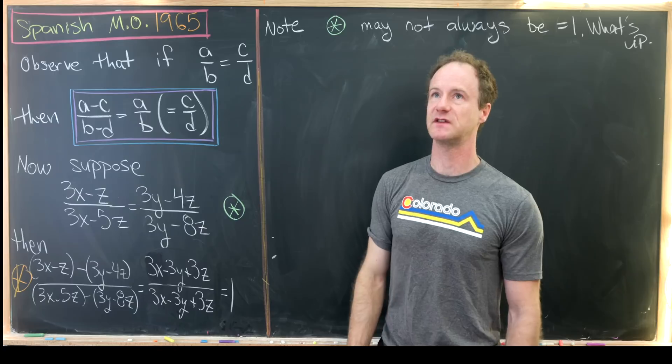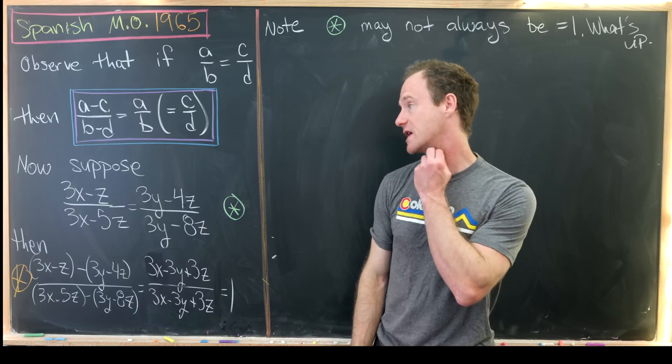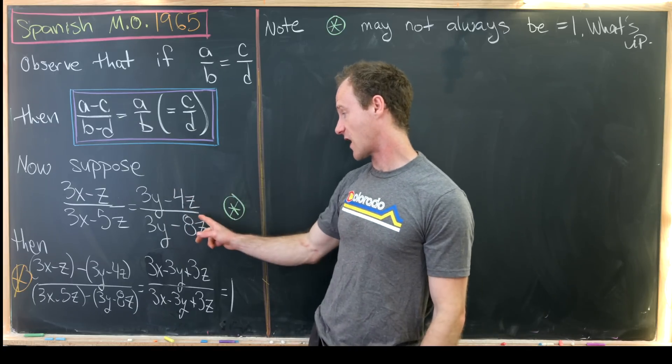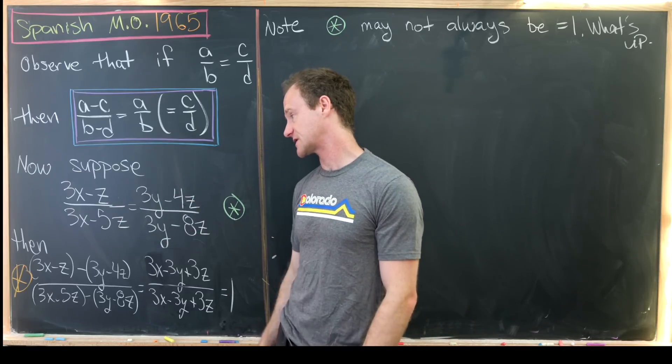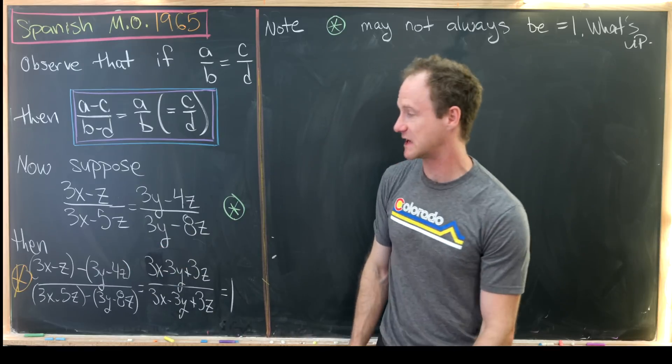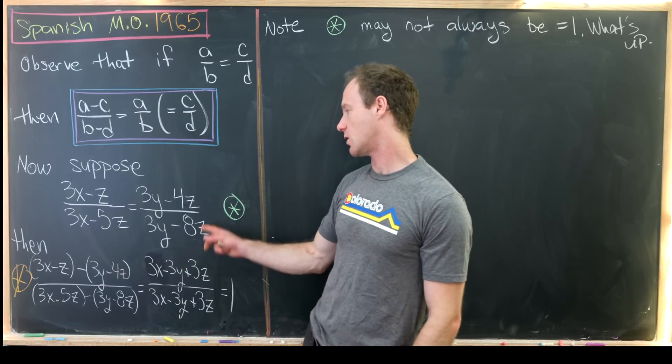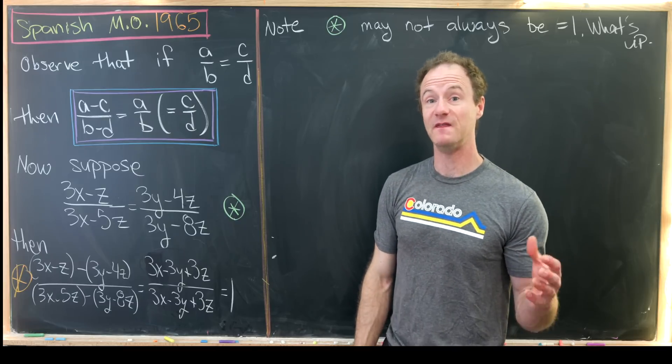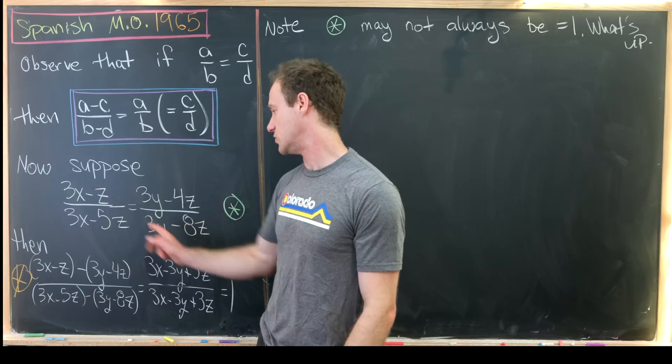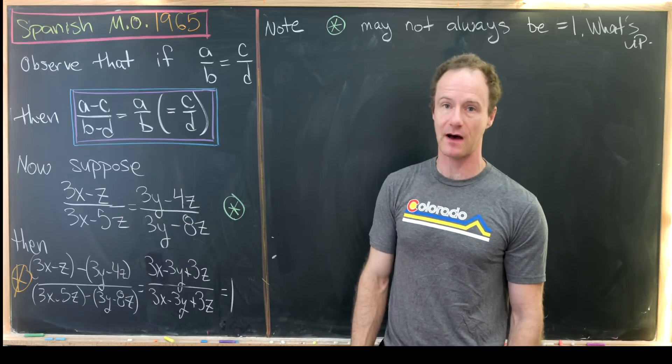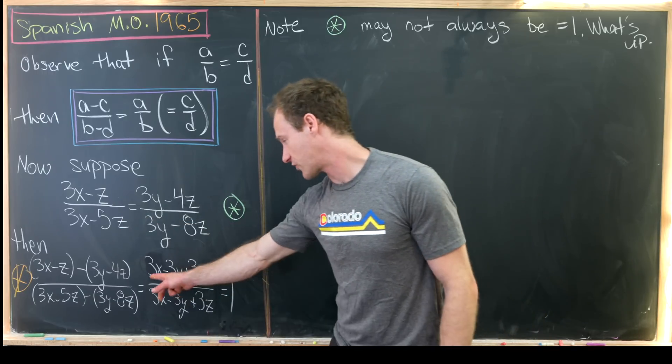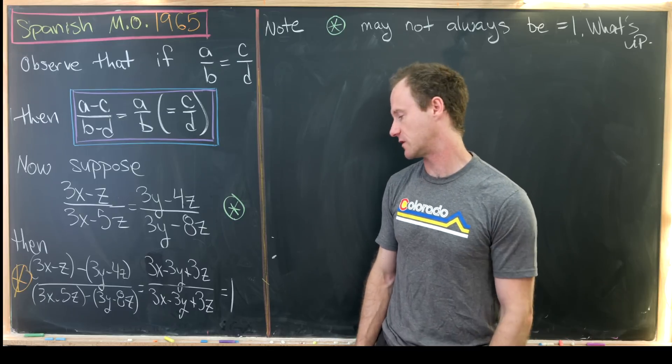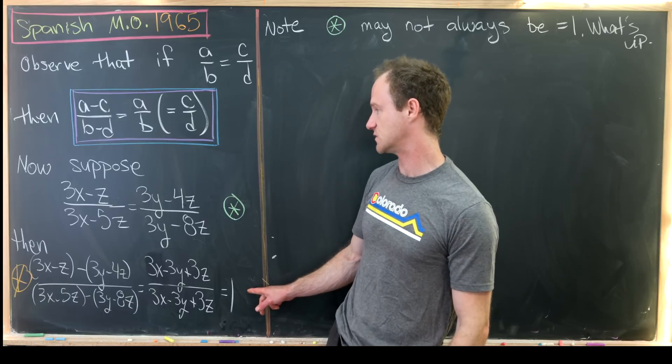So we'll do some examples of this as well as work out why it works. Then we want to suppose that we've got a fraction written two different ways as 3x minus z over 3x minus 5z, and also as 3y minus 4z over 3y minus 8z. And then notice if we take the difference of the numerators over the difference of the denominators, we get 3x minus 3y plus 3z for both the resulting numerator and the denominator, and thus this is 1.